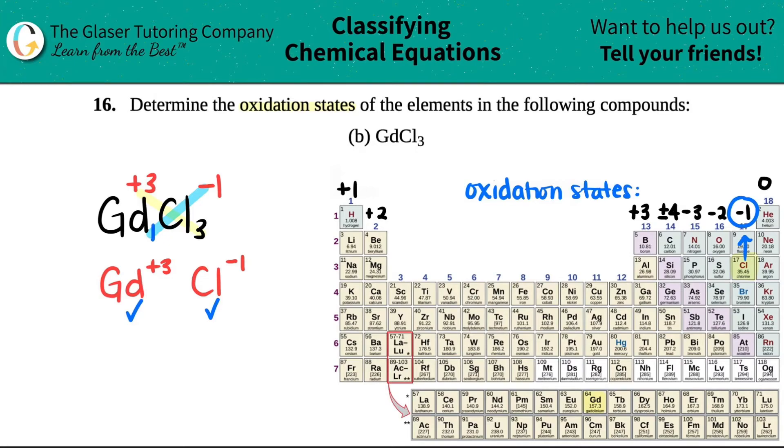This would be your answer. You could write it as this, but maybe what I would do is say Gd the oxidation state would equal a plus three, and for chlorine the oxidation state is a minus one.